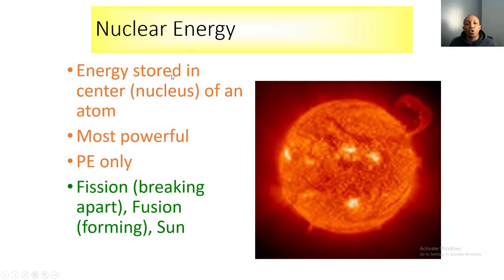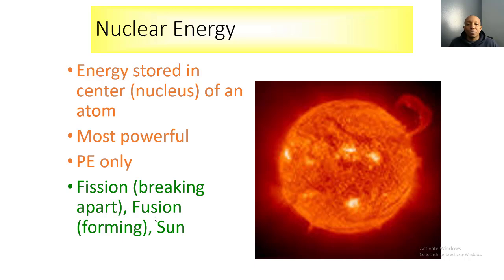Nuclear energy is energy stored in the nucleus of an atom, and it's the most powerful energy of all. It's potential energy because the energy stored in the nucleus is not moving — it's just sitting there. We release this energy through two processes: nuclear fission, where we break apart an atom (nuclear power plants use uranium-235 and plutonium-239, firing a neutron to split the nucleus), and nuclear fusion, which is the reverse — fusing smaller atoms together to release large amounts of energy.